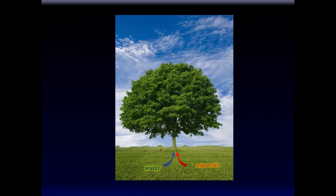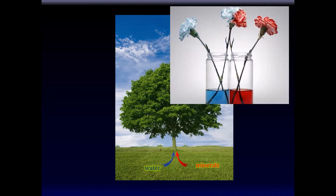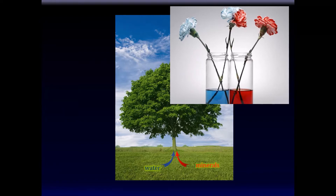Now the question is, how does the water from the ground and the minerals from the ground go to all different parts of the tree? We know this happens. You might have done this experiment before: you put some water in jars with coloring, then put some stems with flowers in them, and you will see the flowers change color, taking up the color of the water they are in.